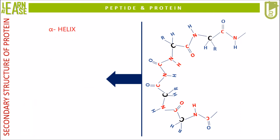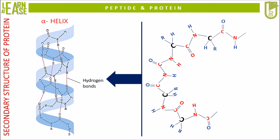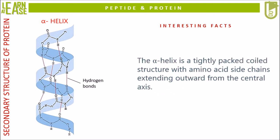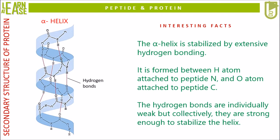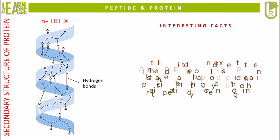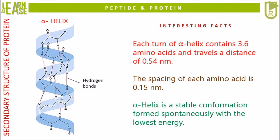Let us first understand about alpha helix. Alpha helix is the most common spiral structure of protein. Alpha helical structure was proposed by Pauling and Corey in the year 1951, which is regarded as one of the milestones in biochemistry research. The alpha helix is a tightly packed coiled structure with amino acid side chains extending outward from the central axis. It is stabilized by extensive hydrogen bonding, formed between the hydrogen attached to peptide nitrogen and the oxygen attached to the peptide carbon. The hydrogen bonds are individually weak but collectively strong enough to stabilize the helix. All peptide bonds, except the first and last in a polypeptide chain, participate in hydrogen bonding. Each turn of alpha helix contains 3.6 amino acids and travels a distance of 0.54 nanometers. The spacing of each amino acid is 0.15 nanometers.